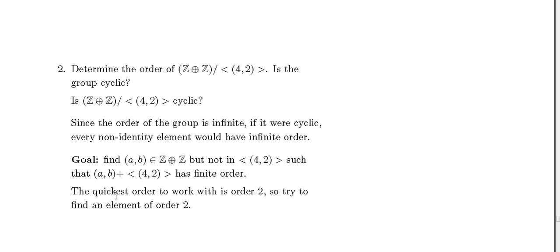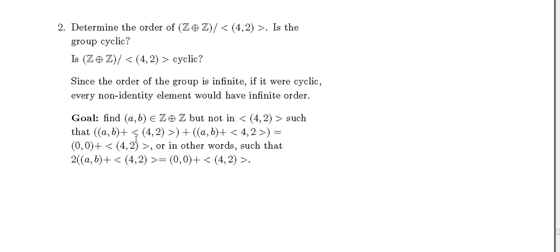The quickest order to work with is order 2, so let us try to find an element of order 2. We have (a,b) in Z⊕Z but not in ⟨(4,2)⟩, and we need (a,b)+⟨(4,2)⟩ plus (a,b)+⟨(4,2)⟩ to equal (0,0)+⟨(4,2)⟩.